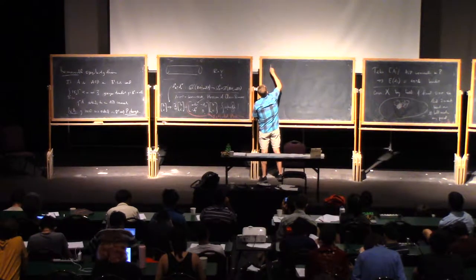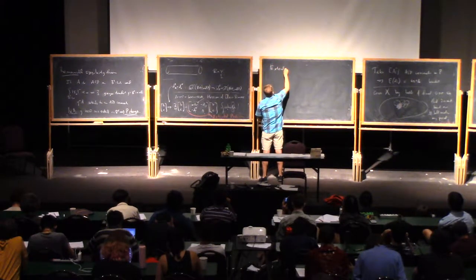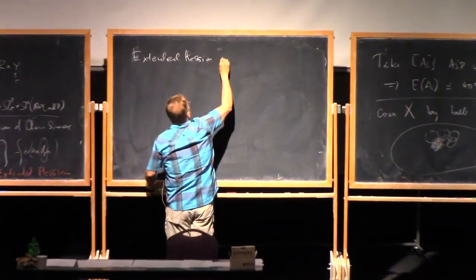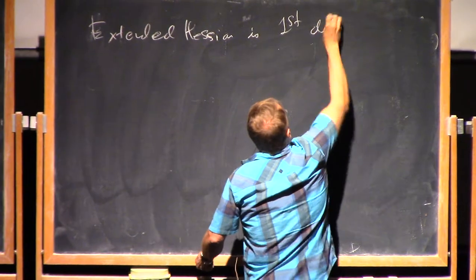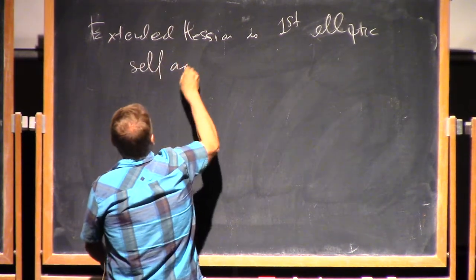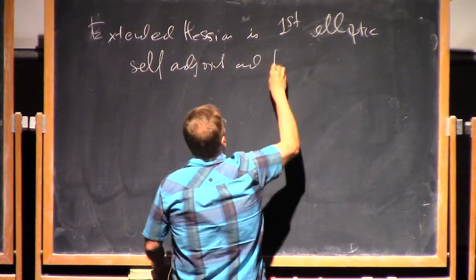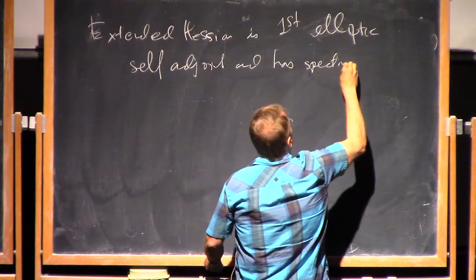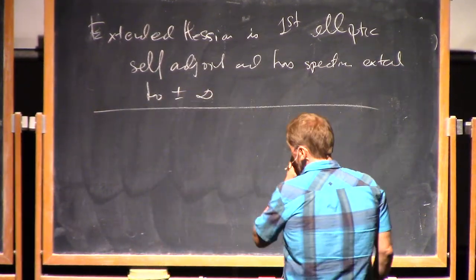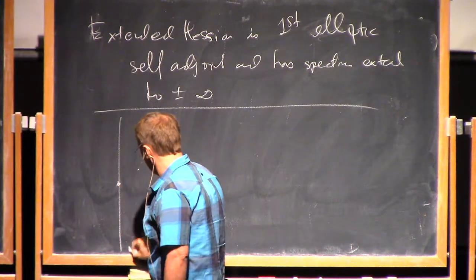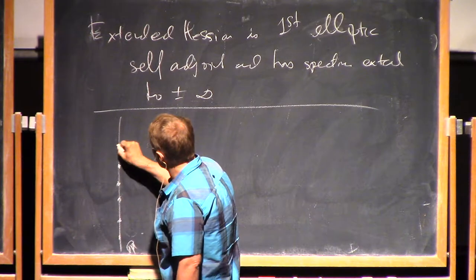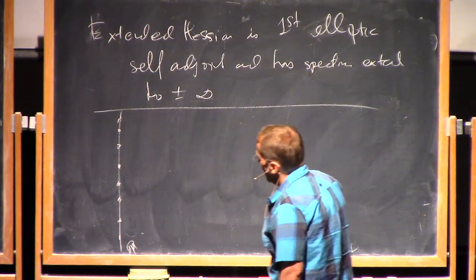So the extended Hessian is first order, it's elliptic, it's self-adjoint, and has a spectrum extending to plus or minus infinity. So here's the R that contains the spectrum. Spectrum's real. Its spectrum's discrete. Looks something like this. And here's zero.